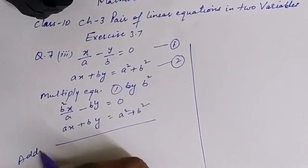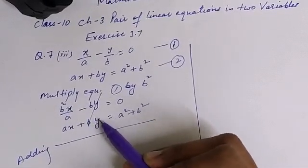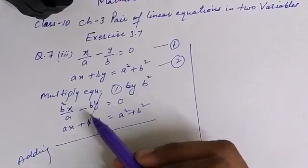Adding these two equations, what we do, these two will be cancelled because this is plus by, this is minus by, that will be cancelled.